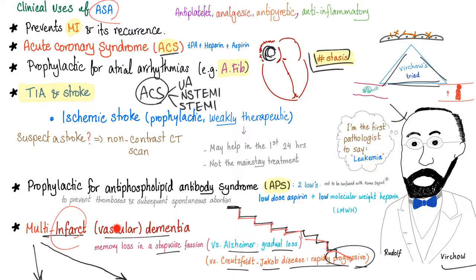Multi-infarct vascular dementia is stepwise — grandma doesn't remember your name, then doesn't remember her own name, then loses orientation to person, place, and time, then forgets how to use a key, then forgets how to walk. We call this multi-infarct or vascular dementia. Aspirin is good for this because it's vascular — there are infarctions, same as infarction in the heart. Virchow's triad: blood stasis, endothelial damage, hypercoagulability.